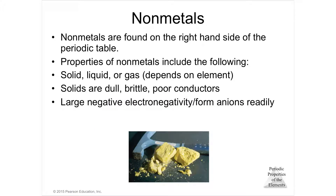Non-metals are found on the upper right side of the periodic table. Their properties vary — some are gases, some solids, some liquids — but they're not like metals. They're poor conductors of heat and electricity. You can't hammer them or pull them into wires; they're brittle and crumbly. Because they have high electron affinity, they form anions easily and become negatively charged.